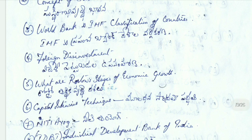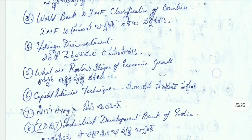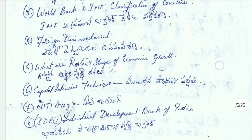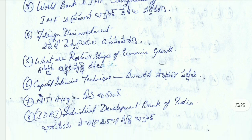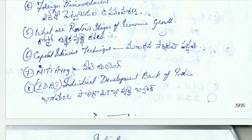What are Rostow's stages of economic growth; capital-intensive technique; labour-intensive technique; NIT Aayug; IDBI - Industrial Development Bank of India.